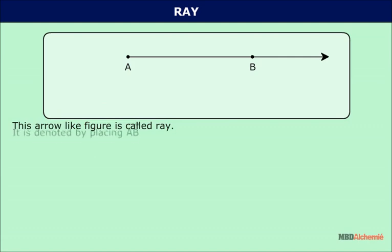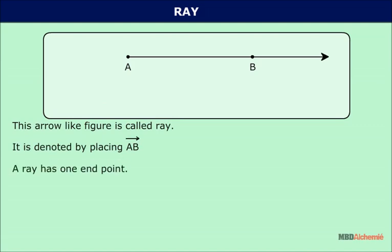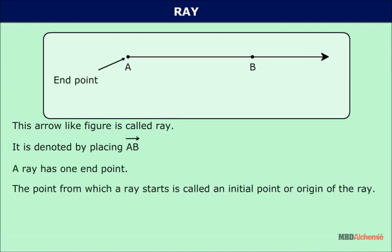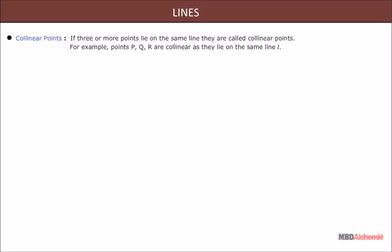To learn about a ray, consider a line segment AB and extend this line segment from A to B. This arrow-like figure is called a ray. It is denoted by placing an arrow over AB and read as ray AB. A ray has one endpoint. The point from which a ray starts is called the initial point or origin of the ray. Here, A is the origin of ray AB.